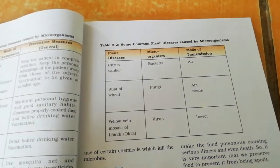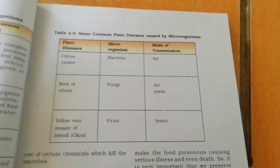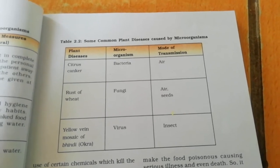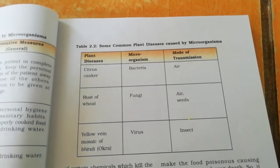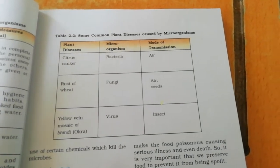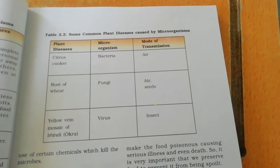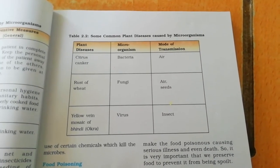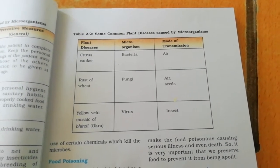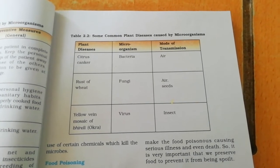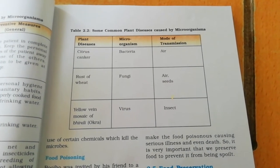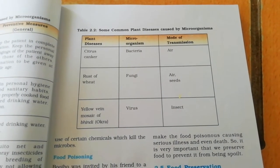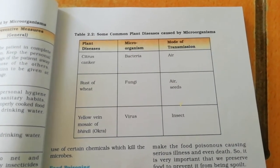Plants also suffer from different kinds of diseases caused by microorganisms. Examples include citrus canker, rust of wheat, and yellow vein mosaic of bendy. Citrus canker is caused by bacteria, rust of wheat is caused by fungi, and yellow vein mosaic of bendy is caused by a virus.